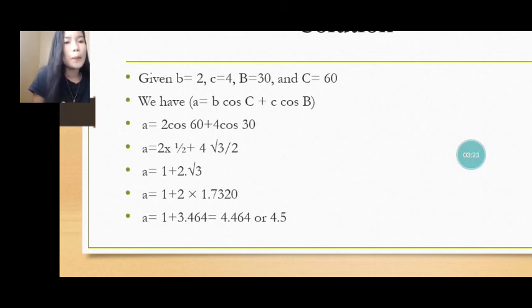The value of unit circle of 60 and 30 degrees in x is 1/2 and √3/2. So, a is equal to 1 plus 2√3. a is equal to 1 plus 2 times 1.7320. So, a is equal to 1 plus 3.464 is equal to 4.464 or 4.5.